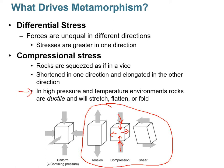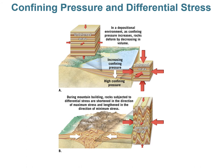Under high pressure and high temperature, rocks are ductile, meaning they can stretch, fold, or even flatten. In a basin with accumulating sediments you get confining pressure equal in all directions. In an environment where two tectonic plates are colliding, this creates a lot of differential and compressional stress — maximum forces squeeze rocks together and elongate them in the perpendicular direction, creating folds and faults.